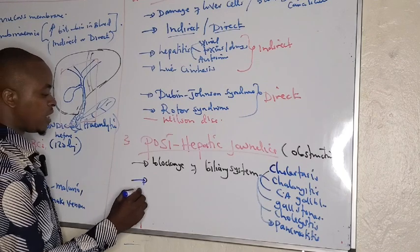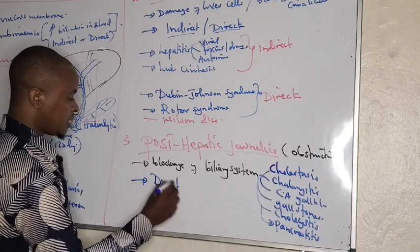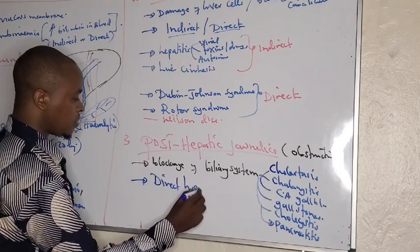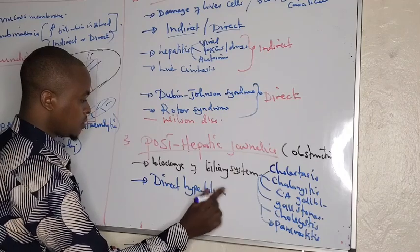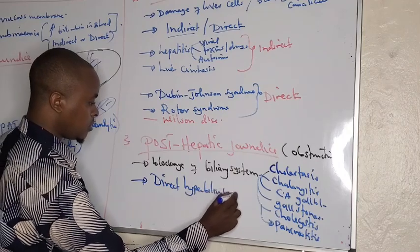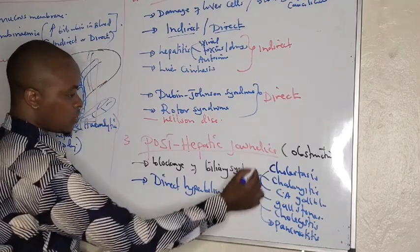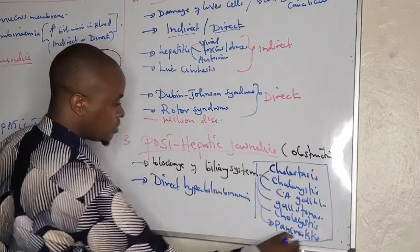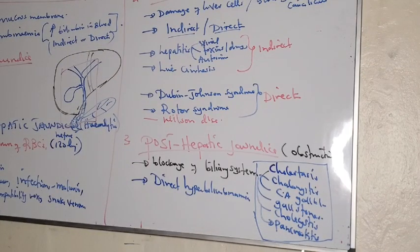The type of bilirubin elevated in post-hepatic jaundice is direct — we see direct hyperbilirubinemia. The causes are hepatobiliary disorders or hepatobiliary diseases. Those are the causes of post-hepatic jaundice.